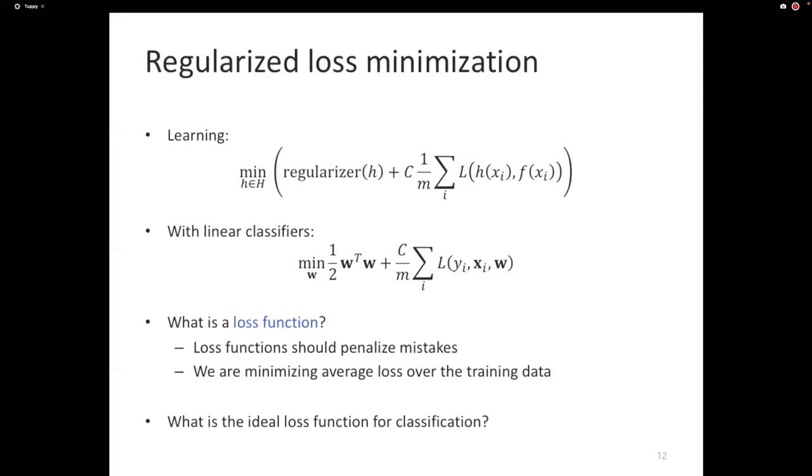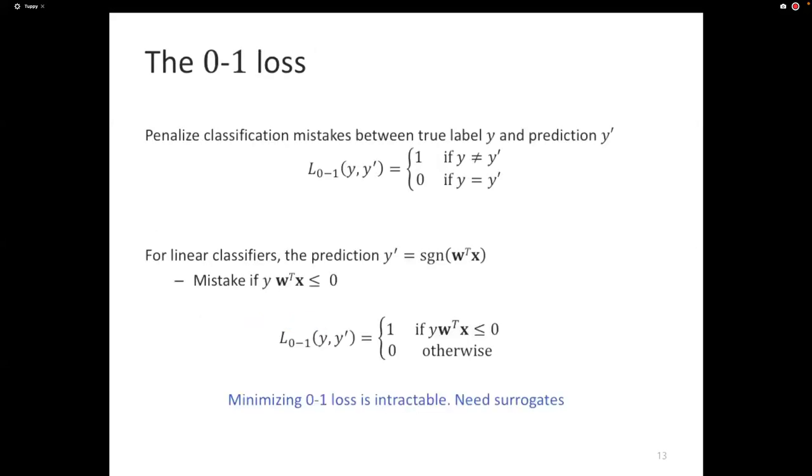Counting the number of mistakes, each mistake is an example of an error. If the prediction and the ground truth are the same, it's not a mistake. So we've seen this before, right? We've seen this before. In fact, it's called the 0-1 loss.